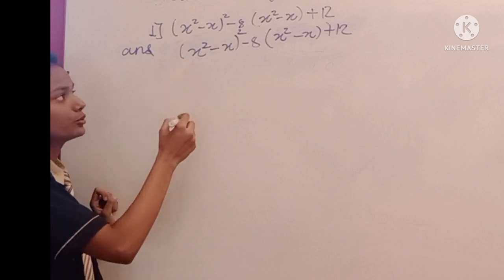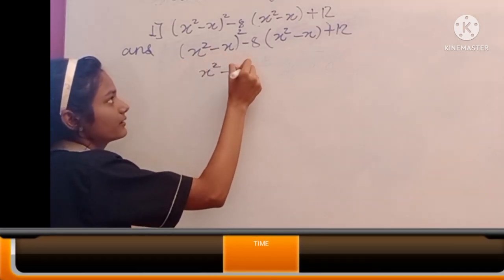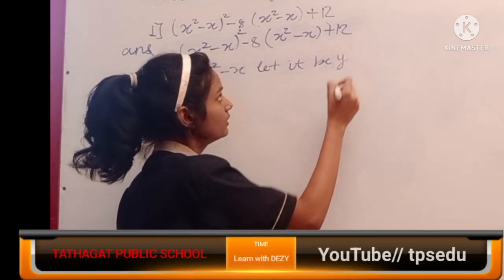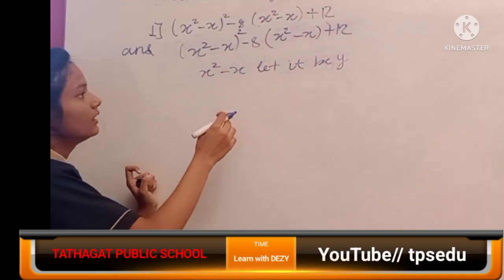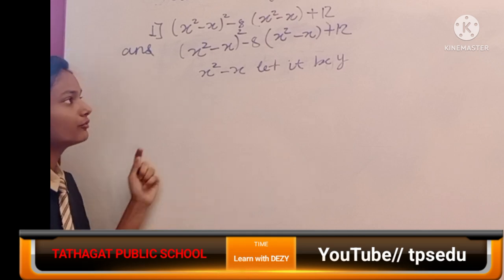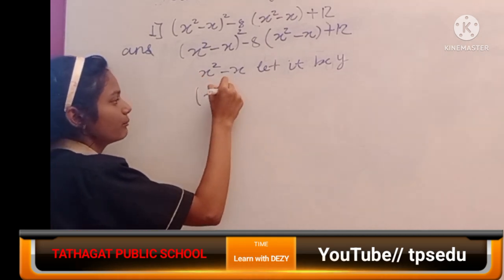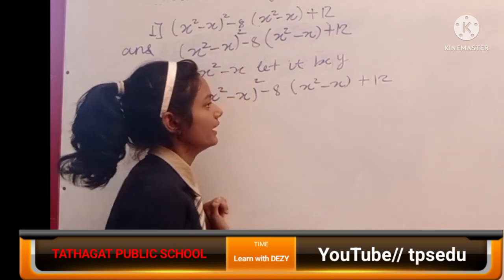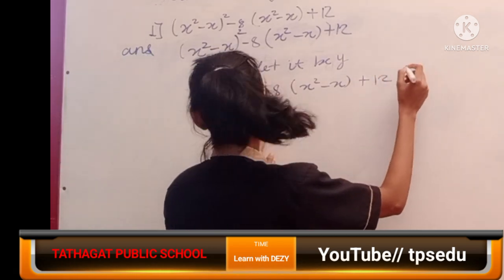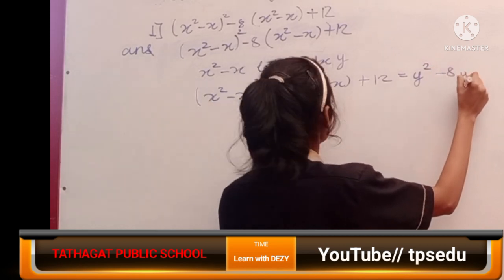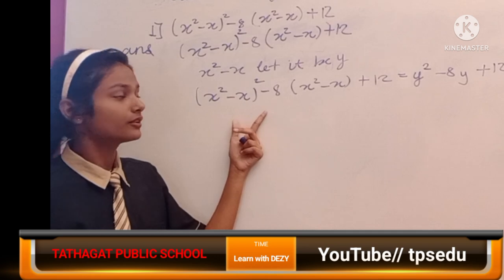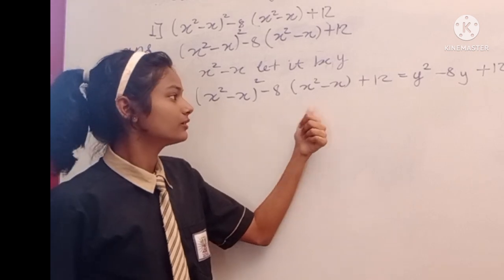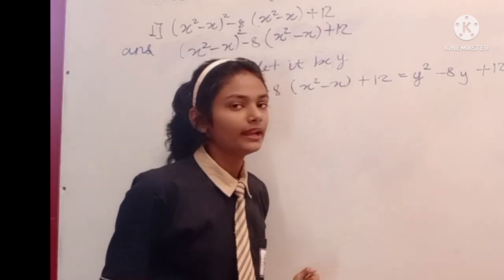We will substitute these two equal terms with y, writing x squared minus x and letting it equal y. We take the whole example and substitute y in place of those two terms. So we write y squared minus 8y plus 12. You can see there is a square bracket — that's why we take y squared here. The 8 is in multiplication, so it becomes minus 8y, and 12 remains as it is.